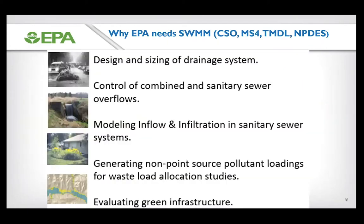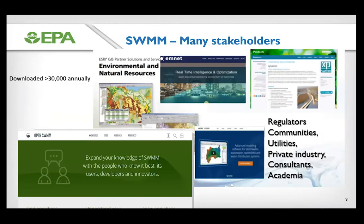EPA needs SWMM for combined sewer overflow permitting, and it's helpful in designing and sizing drainage systems, controlling combined sanitary sewer overflows, modeling inflow and infiltration in sanitary sewer systems, generating non-point source pollutant loadings for waste load allocations, and evaluating green infrastructure. SWMM has been downloaded on average 30,000 times annually in the last 10 years. There's GIS-SWMM, R-SWMM, and it's the basis of XP-SWMM, InfoSWMM, and PC-SWMM — a lot of commercial products use SWMM. Consultants and academia throughout the world, including at the University of Minnesota, are using SWMM for runoff and water quality.